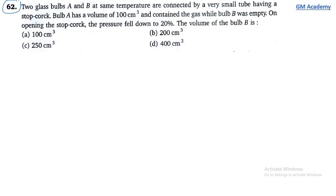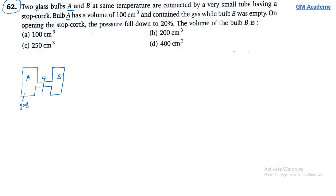Next question 62: Two glass bulbs A and B at the same temperature are connected by a very small tube having a stop cork. Bulb A has a volume of 100 cm³ and contained a gas, while bulb B was empty.